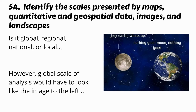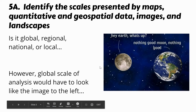5a says: identify the scales presented by maps, quantitative and geospatial data, images, and landscapes. When you're looking at scale, there are a bunch of different ways to look at it. If you're looking at a world map, the scale is global; if you're looking at a map of the United States, the scale is national. But when you're looking at scale of analysis, you're looking at how the data is presented and how the data is aggregated.